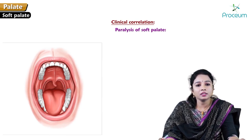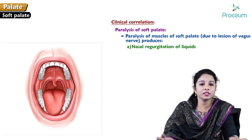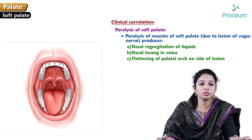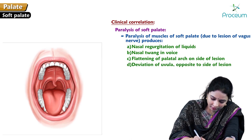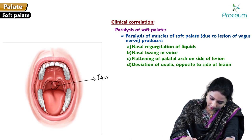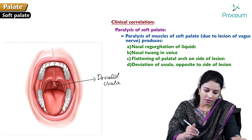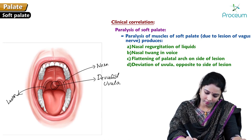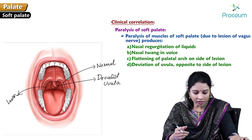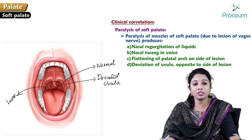Clinical correlation — paralysis of the soft palate: A lesion of the vagus nerve causing paralysis of the soft palate muscles produces nasal regurgitation of fluids or a nasal twang in the voice, flattening of the palatal arch on the side of the lesion, and deviation of the uvula to the opposite side of the lesion. This occurs because the normal muscle on the unaffected side pulls the uvula toward it.